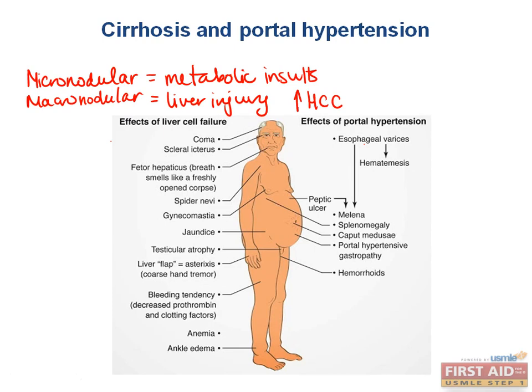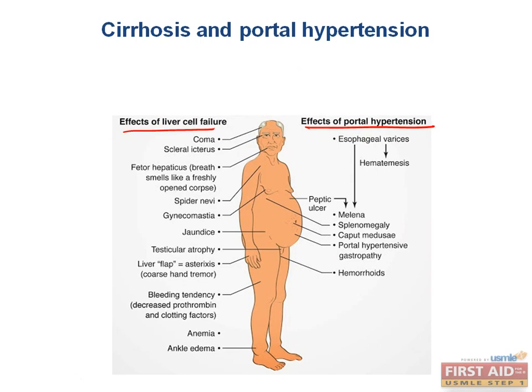As we've discussed in detail before, portal hypertension can be relieved by a variety of different portosystemic anastomoses. Let's take a look at the effects of cirrhosis on the rest of the body. We can divide these into the effects of portal hypertension and the effects of liver cell failure. The liver is a critical organ with many functions, and destroying it through cirrhosis is devastating.